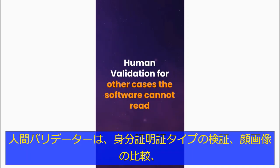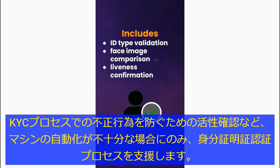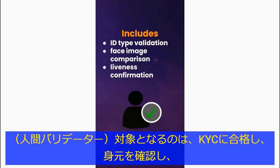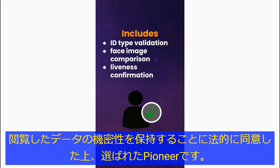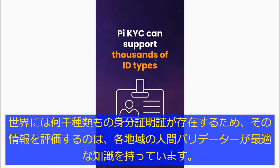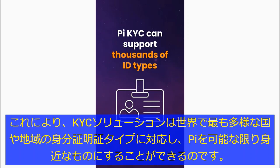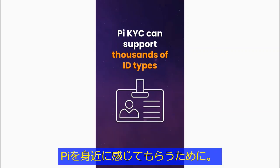Human validators will only help with the identity authentication process when machine automation falls short, including ID type validation, face image comparison, and liveness confirmation to prevent cheating in the KYC process. These are selected pioneers who have already passed KYC, verified their identity, and have legally agreed to maintain the confidentiality of any data they see. As there are thousands of ID types in the world, human validators from your local region are the best knowledgeable individuals to assess that information, making Pi as accessible as possible.